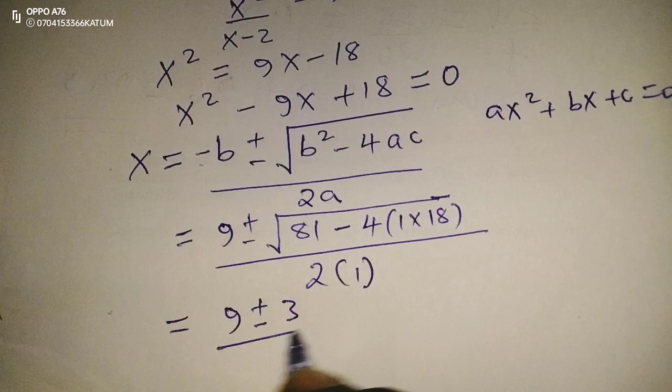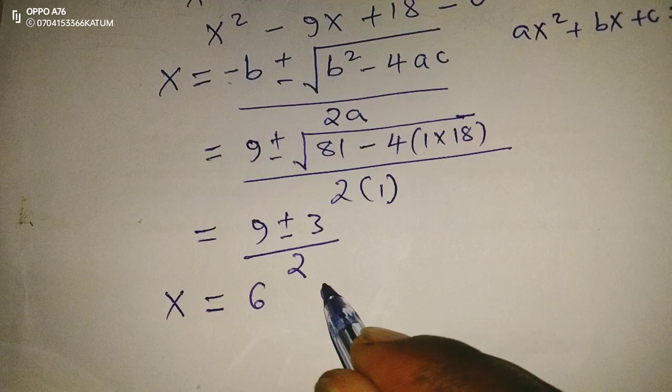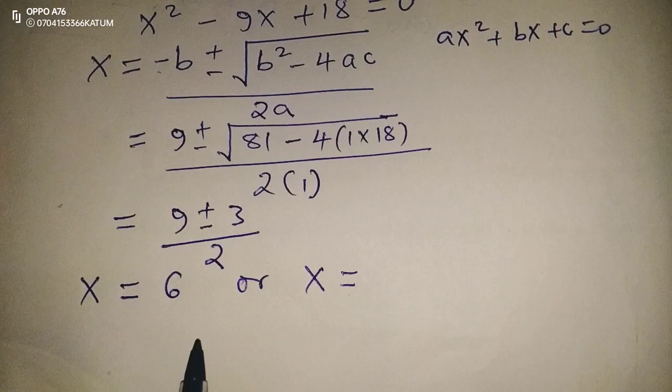Then we can get to our two values of x. Either x equals 9 plus 3, giving us 12 divided by 2, which is 6, or x equals 9 minus 3, giving us 6 divided by 2, which is 3. So the two possible values of x are 6 or 3.